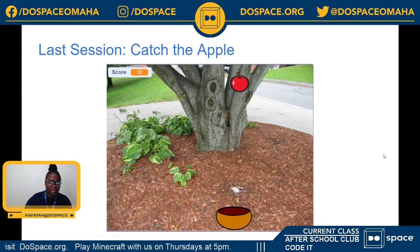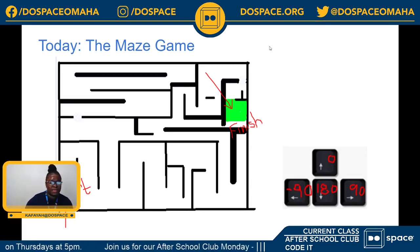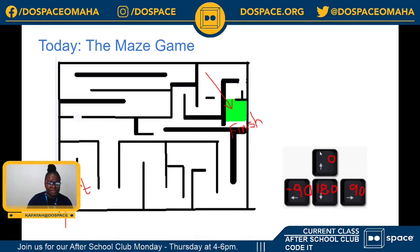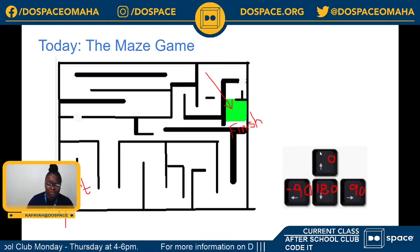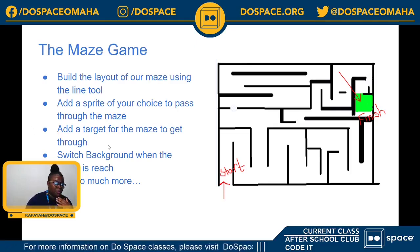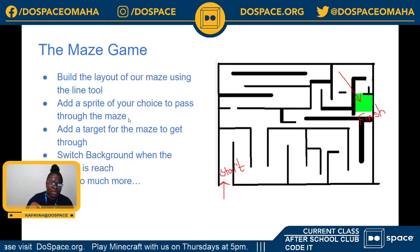Building off everything we've done in the past two weeks, this week's activity is the maze game, which is also very seasonal. We're going to build our maze and give ourselves a challenge. Instead of using our mouse or trackpad, we are going to be using the arrow keys on the keyboard — the up, down, left, and right arrows will be our best friends for this activity. We're going to build the layout of our maze using the line tool, and then add a sprite to navigate through the maze.